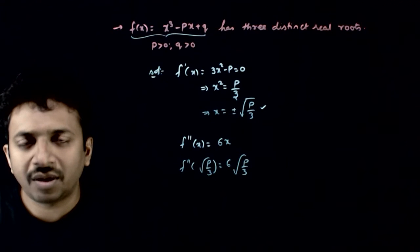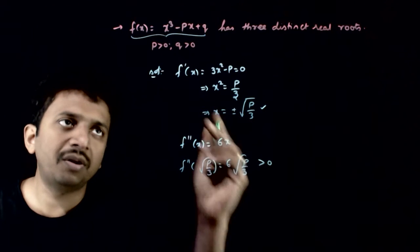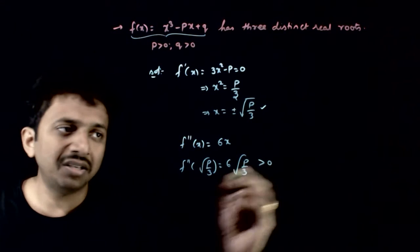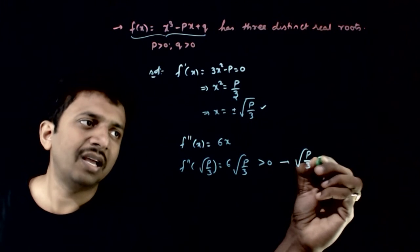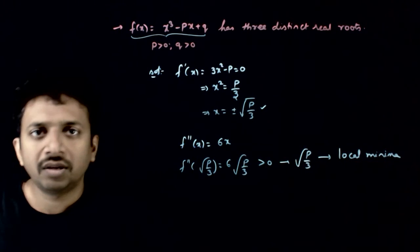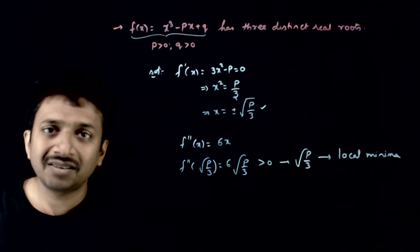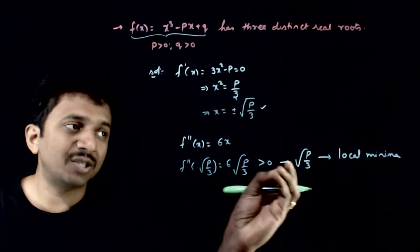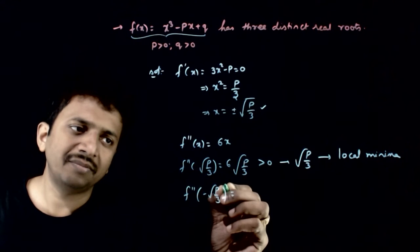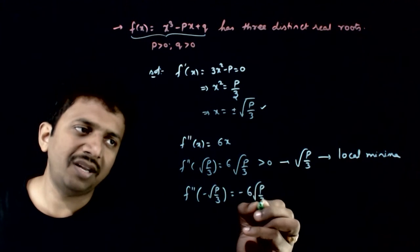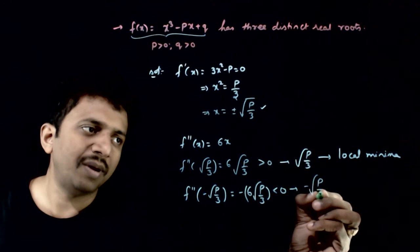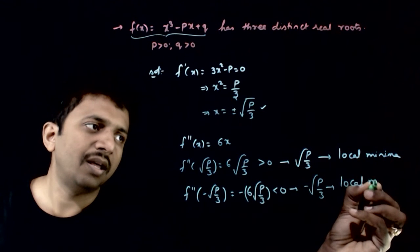6 times square root of p by 3 is obviously greater than 0, because p is greater than 0. So if f double dash is greater than 0, this point root p by 3 corresponds to local minima. Similarly, f double dash of minus root p by 3 is nothing but minus times 6 times root p by 3, which is less than 0. That means minus root p by 3 corresponds to local maxima.